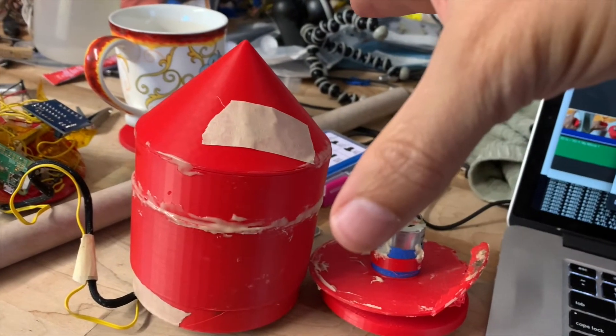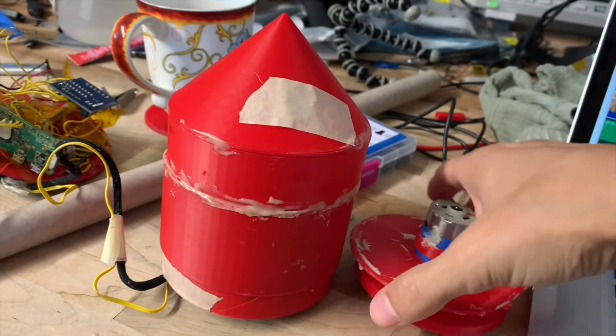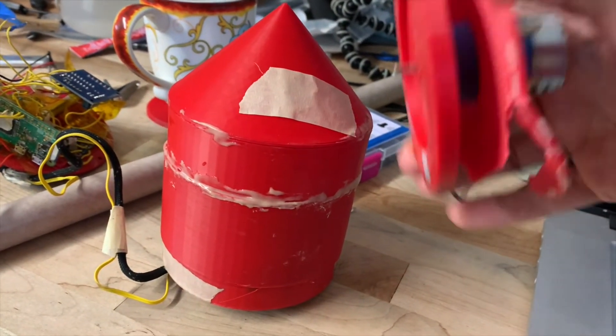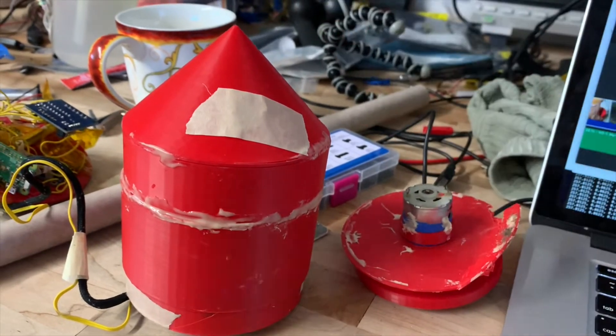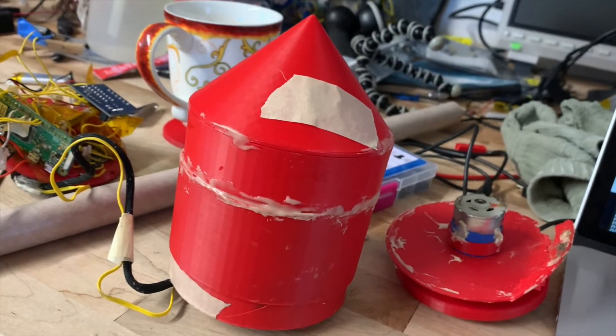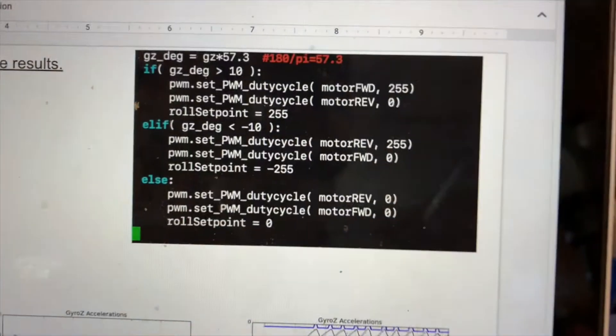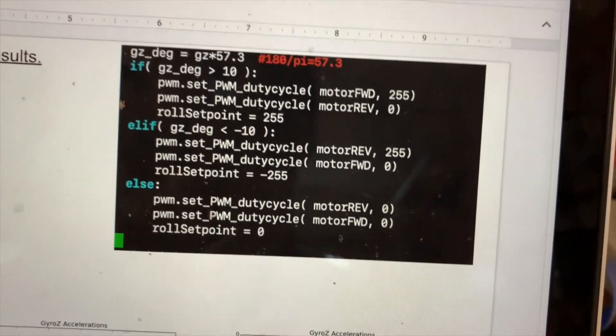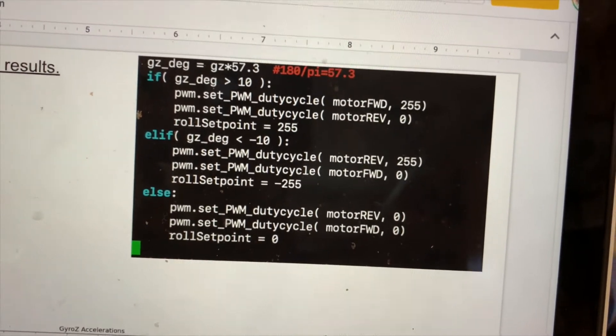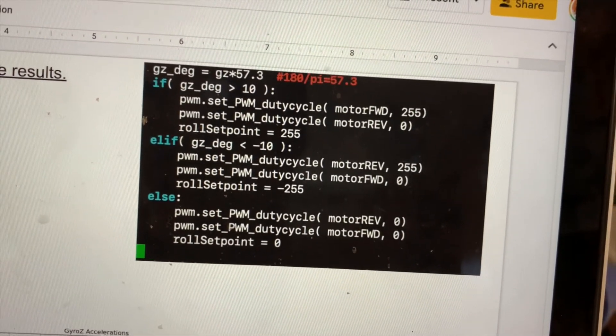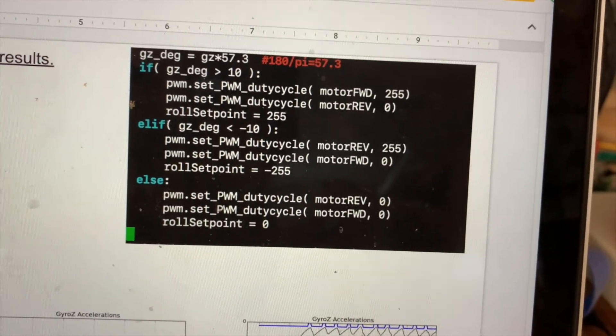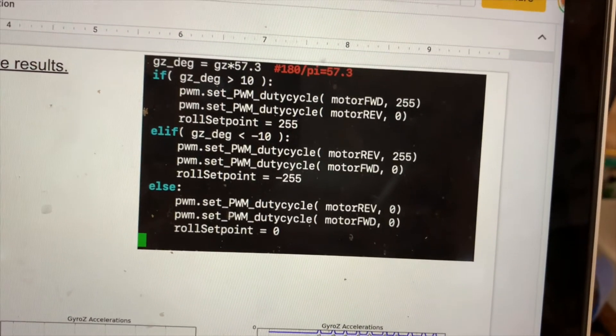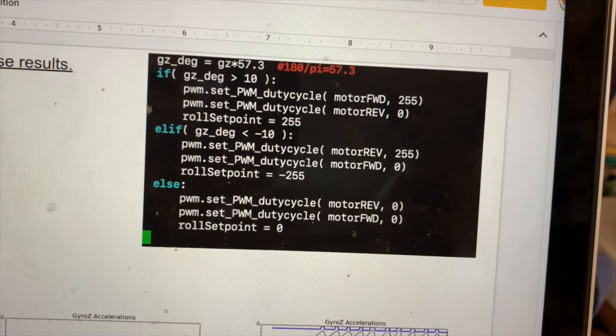The idea is the rocket starts spinning, you just spin up the mass the other way, and conservation of angular momentum will stop it spinning. So I came up with a pretty simple algorithm. It basically says if I start spinning faster than 10 degrees a second, spin the motor as fast as you can in one direction. If it's going negative 10 degrees per second, spin the other way as fast as you can. Otherwise just let it sit there.